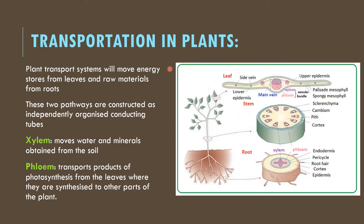Transportation in plants: plants are autotrophs that prepare their own food during photosynthesis in the leaves. This food and energy must be transported from leaves to other parts of the plant including the roots, and from the roots, raw materials like water and minerals from the soil must be transported upward. This is done by xylem and phloem, which are called vascular tissues — together called vascular bundles. These bundles are located in the leaves, stem, and roots. Xylem moves water and minerals from roots to other parts; phloem transports products of photosynthesis from leaves to other parts of the plant.